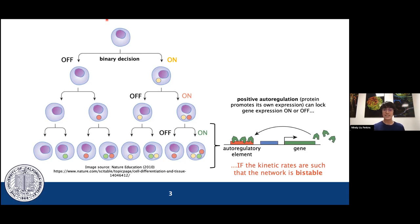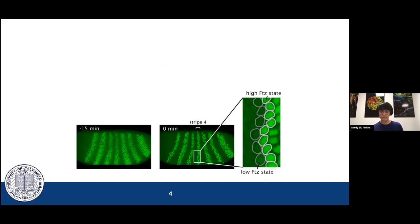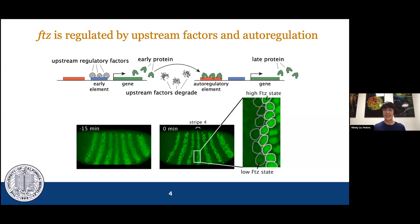We decided to study this question in the fruit fly embryo. Here we are looking at the expression pattern of a gene called fushi tarazu (FUTs). FUTs is a pair rule gene that's expressed in seven stripes that are refined over a period of about 15 minutes before gastrulation into a more or less binary pattern of expression. FUTs is regulated by two enhancers. There is an early element shown here in blue that binds upstream regulatory factors, and an autoregulatory element shown here in red that binds the FUTs protein itself to drive FUTs expression.